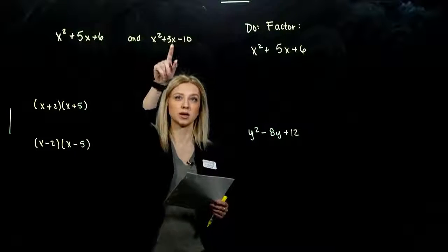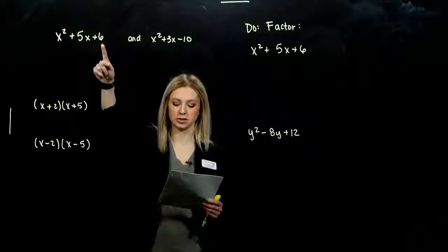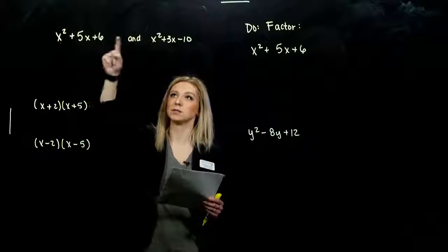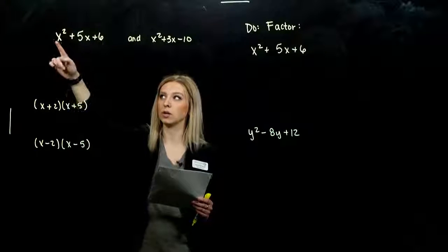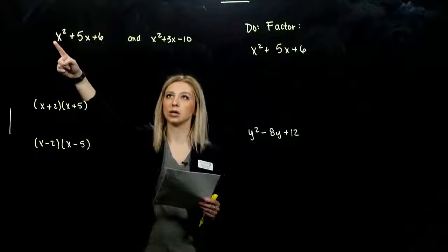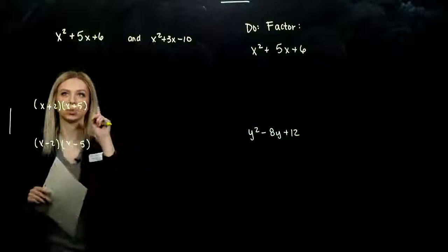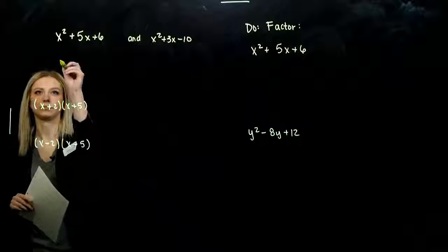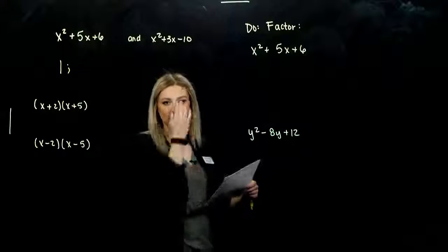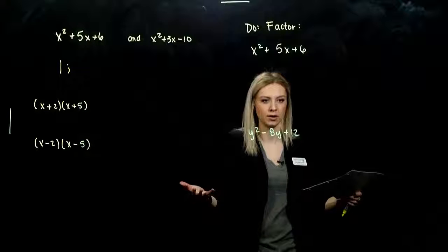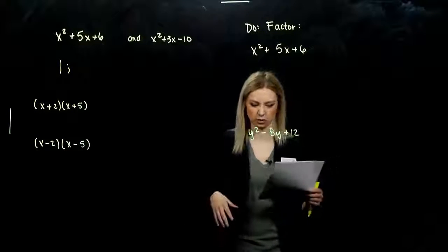So x squared plus bx plus c. In each of these cases — and all of the cases that we're going to deal with in this section — what is our leading coefficient? The number on the front of x squared in this case is 1. And that's a nice case to have because it automatically tells us one part of the factor.